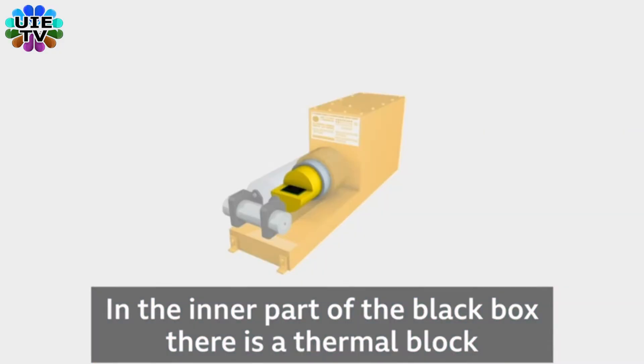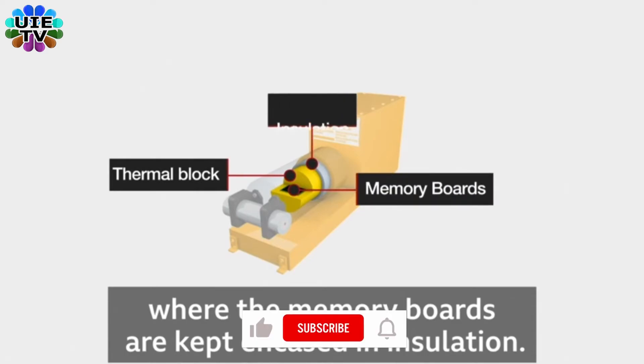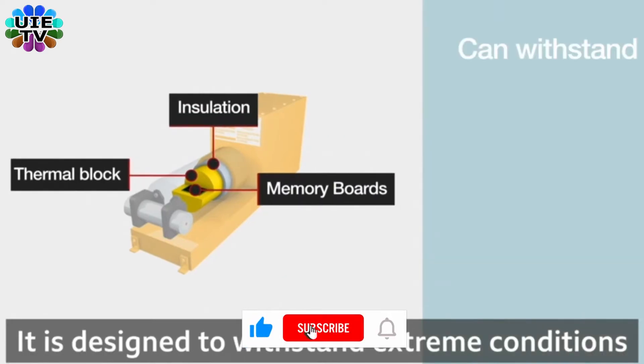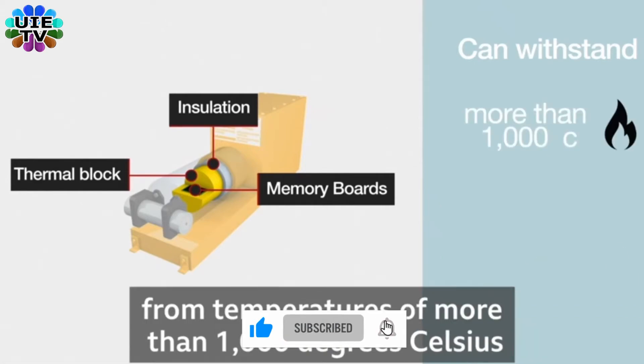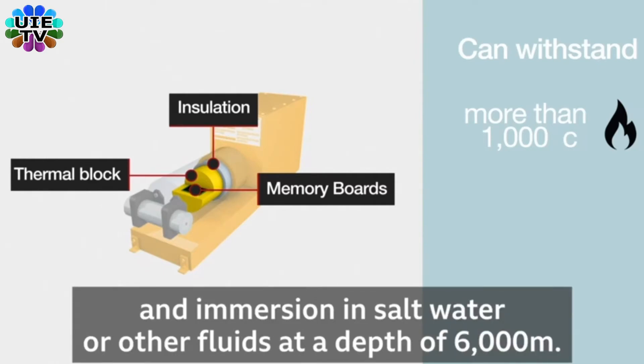In the inner part of the black box, there is a thermal block where the memory boards are kept in case insulation. It is designed to withstand extreme conditions from temperatures of more than 1000 degrees Celsius for up to one hour and immersion in salt water or other fluids at a depth of 6000 meters.